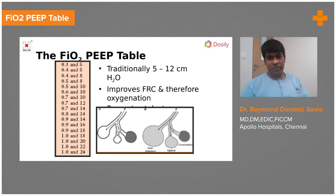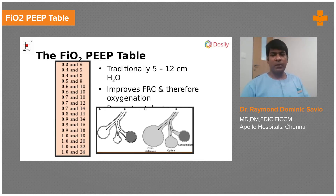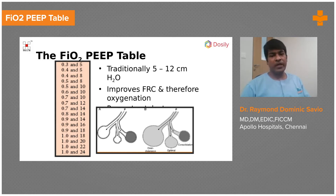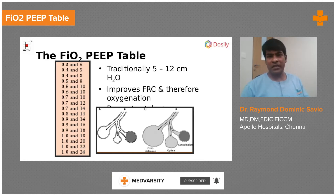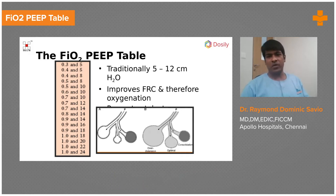On the right side panel, after application of PEEP: nothing has happened to the dense consolidation, the middle one has opened up — that is favorable — but see how you are beginning to hurt the functional lung or the baby lung. You have actually over-distended it and by this time converted that into dead space.